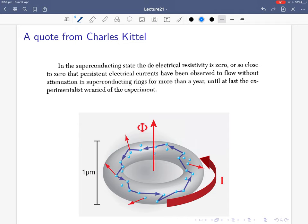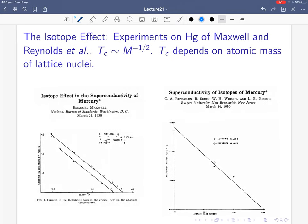Let's get a quote from Charles Kittel, who was the PhD supervisor of Phil Pincus and the postdoctoral supervisor of de Gennes. He said in his book on solid state physics: 'In the superconducting state the DC electrical resistivity is zero or so close to zero that persistent electrical currents have been observed to flow without attenuation in superconducting rings for more than a year, until at last the experimenter wearied of the experiment.' So you can generate a current in it by changing the flux through it, and then let it persist, and it just persists forever.